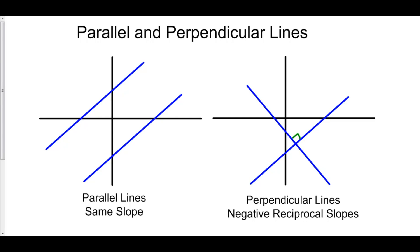Let's talk about parallel and perpendicular lines. Parallel lines never meet, and therefore they have to have the same slope. They have to go the same direction to not meet, and direction is slope.